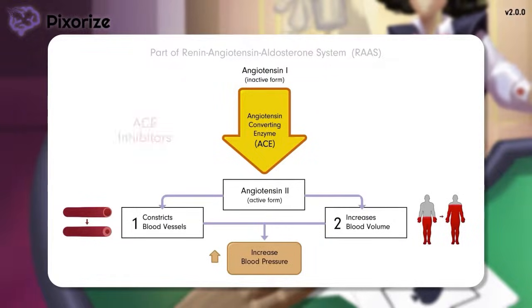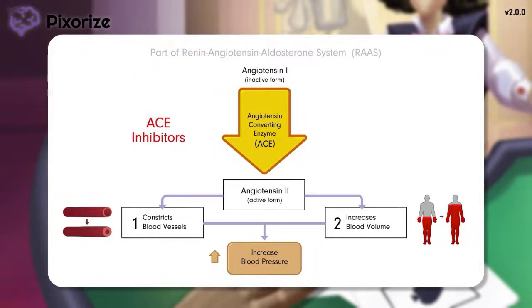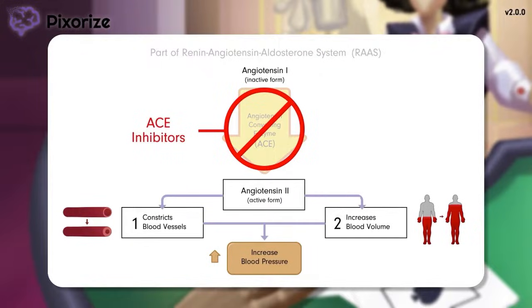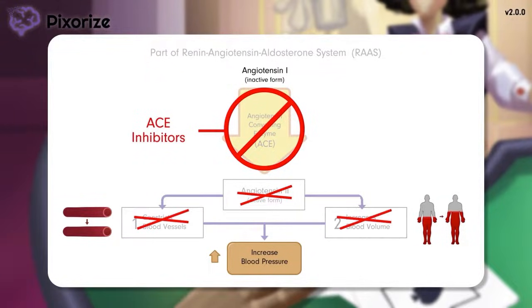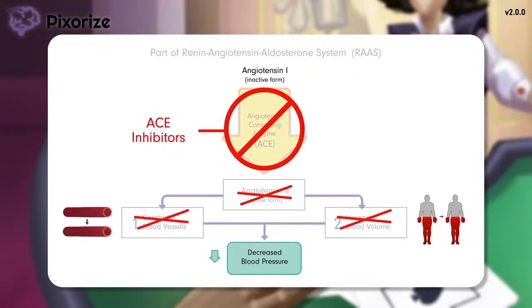Now let's talk about where ACE inhibitors come in. ACE inhibitors work by inhibiting ACE, which prevents the formation of active angiotensin-2. This prevents the constriction of blood vessels and prevents the increase in blood volume. All this eventually leads to a decrease in blood pressure.